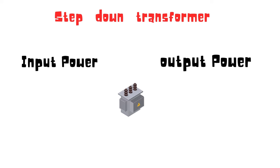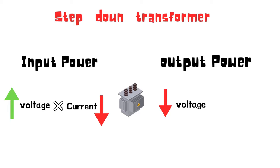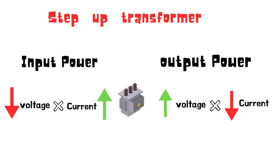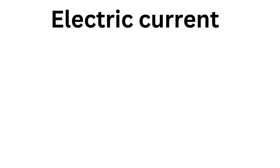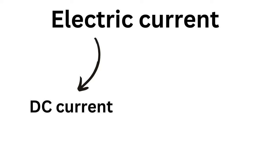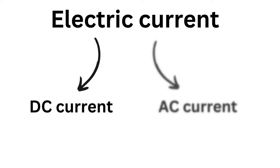In the step down transformer, the output voltage relates to the output current. We usually use two components related to the output current. As we can see, there is DC current and AC current.